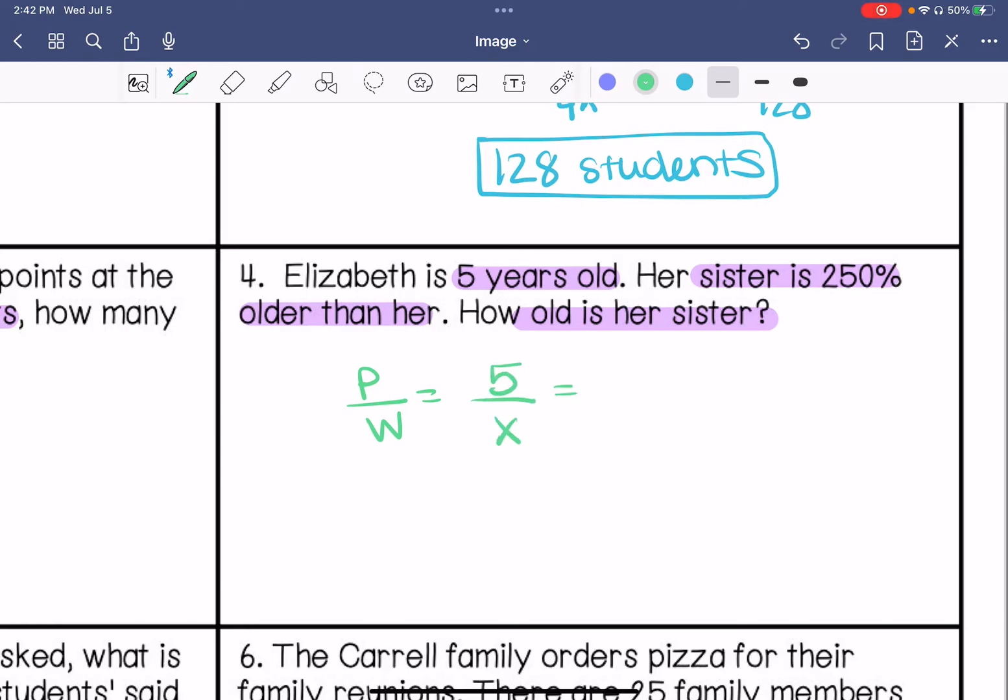We know that, I'm sorry, the 5 would not be the part. We know that she is 5 years old, and we don't know how old her sister is. We know her sister is, this unknown is 250% of her age.